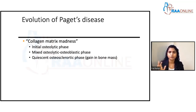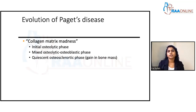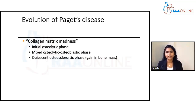In the osteolytic phase, a lot of bone is eaten up and bone becomes weak. In response to this osteoclastic activity, osteoblasts are triggered to compensate for the loss of bone. There is an intermediate mixed phase where osteoblasts try to compensate for the madness of the osteoclasts.